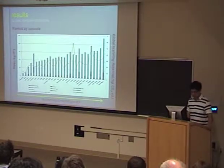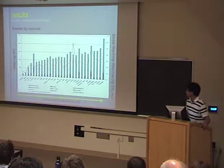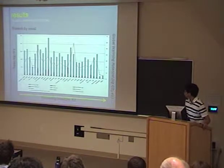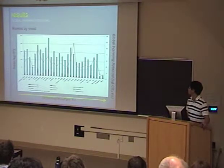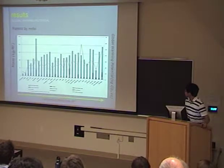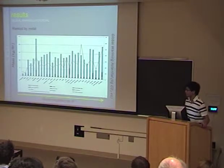We can see the global warming potential for increasing concrete per square foot, and once again we have an increasing trend. For wood, the global warming potential looks like it's decreasing — it is less than concrete. For metal, increasing metal per square foot also shows an increasing trend.